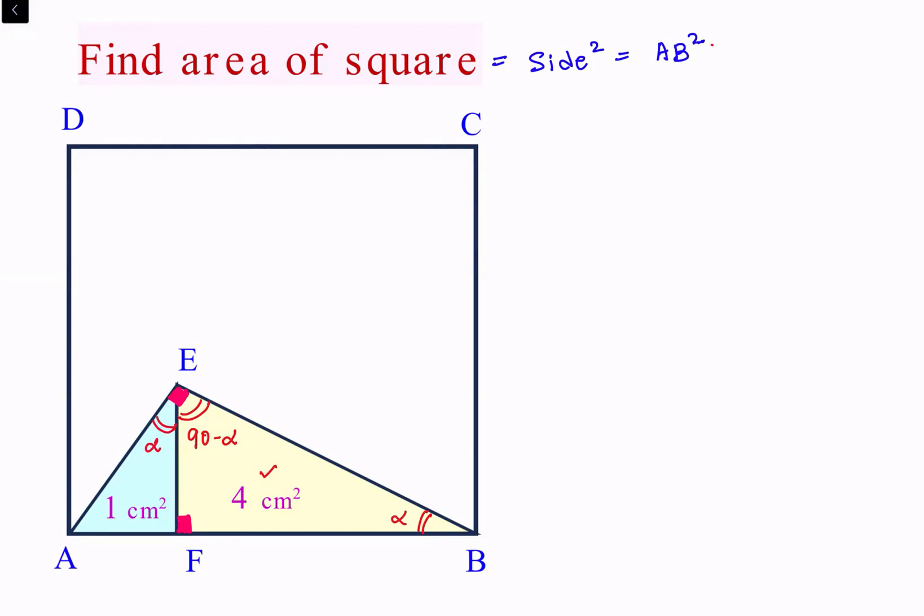So this blue triangle and yellow triangle are similar to each other. We will say triangle AFE is similar to triangle EFB. Now in similar triangles we know that the ratio of areas, area of triangle AFE upon area of triangle EFB,